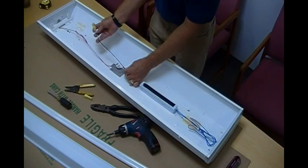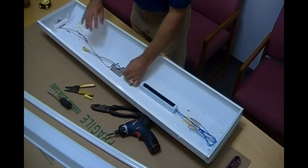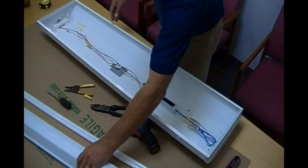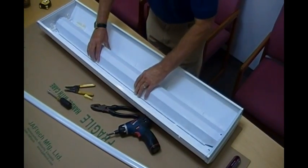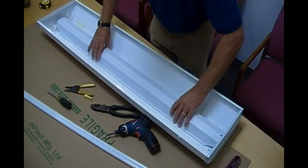Again, attach your power leads to your source. Be sure that the power is turned off and reattach your existing ballast cover.